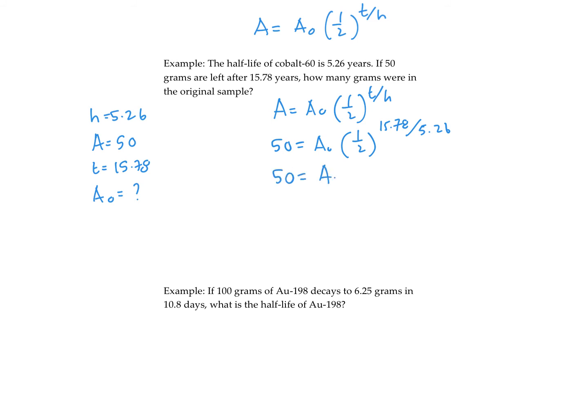So I could divide 15.78 by 5.26. That works out to be 3. One half to the power of 3 is a half times a half times a half. So 1 over 8. So if I cross-multiply to solve. So I'm going to cross-multiply 50 by 8. And that is 400.